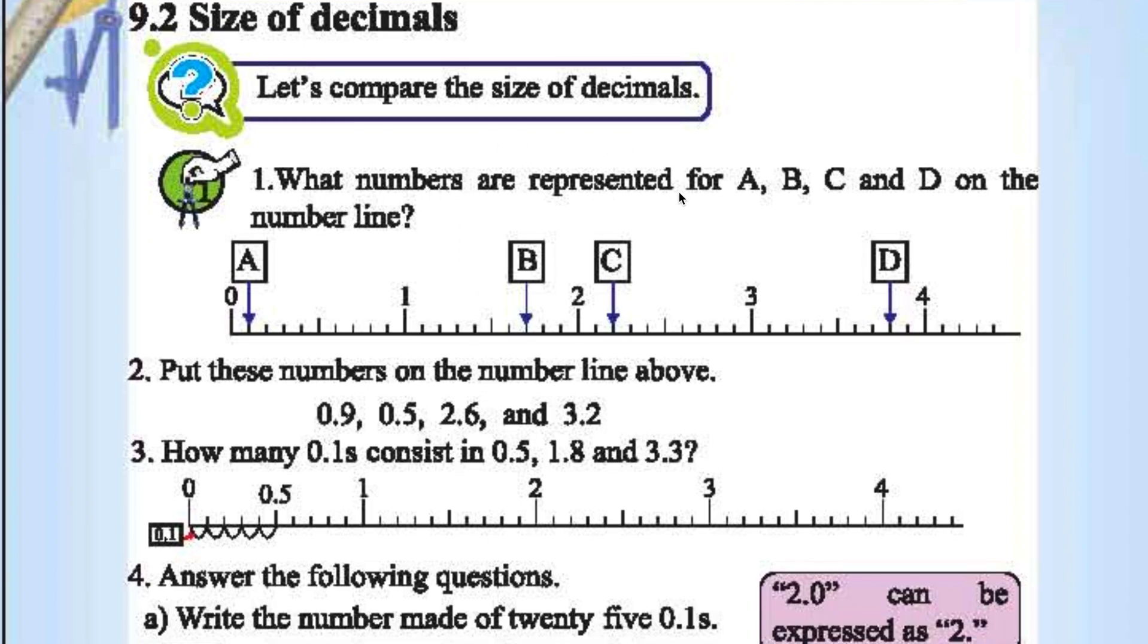What number are represented for A, B, C, D on the number line? A represents 0.1. First division. There are 10 divisions from 0 to 1. It represents first division. So 0.1. 1 by 10 are nothing but 0.1.